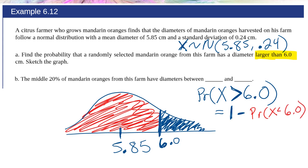So that's what I need to know. I need to know what is 1 minus the probability X is less than 6.0. Let's go to Excel.